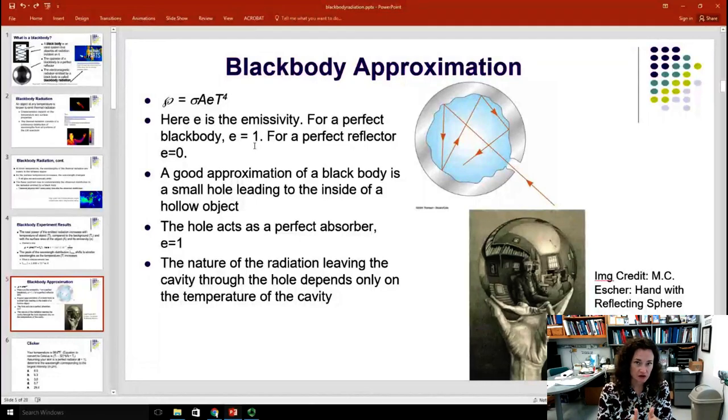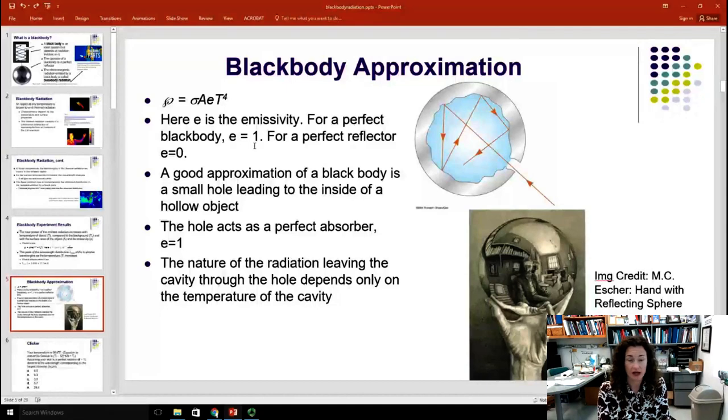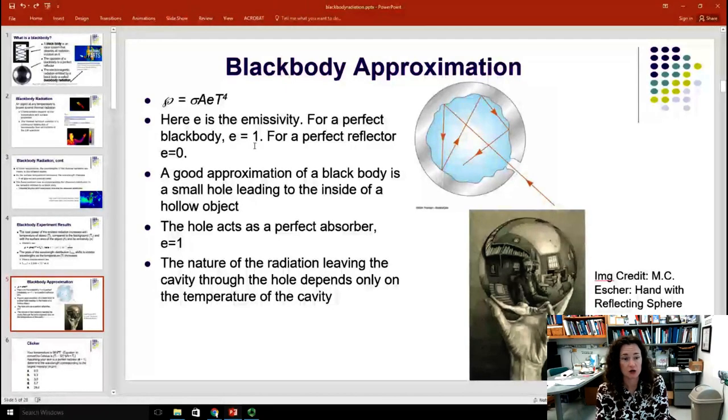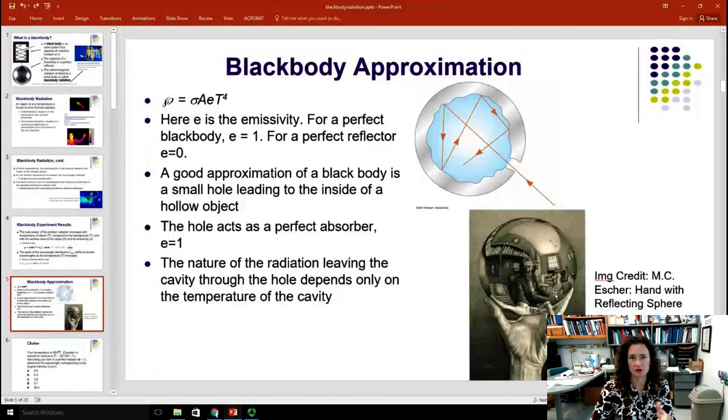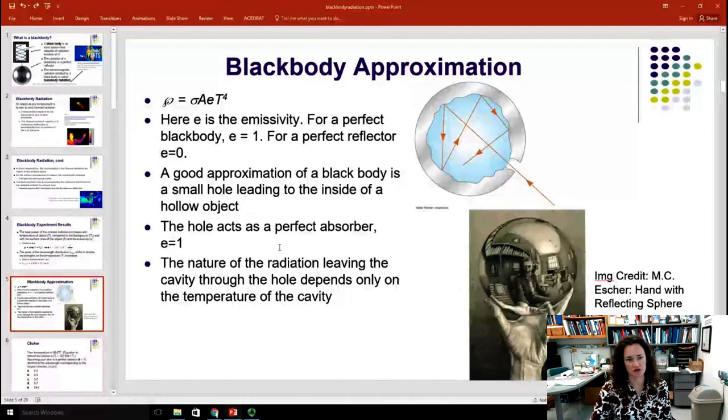A good approximation of a black body, like we said, would be that pinhole in a black object. And that would be a perfect absorber, or a perfect black body, which would be E is equal to 1. And then maybe the perfect reflector might be a really nice picture from this M.C. Escher hand-worth reflecting sphere, so that might be a perfect reflector for you.